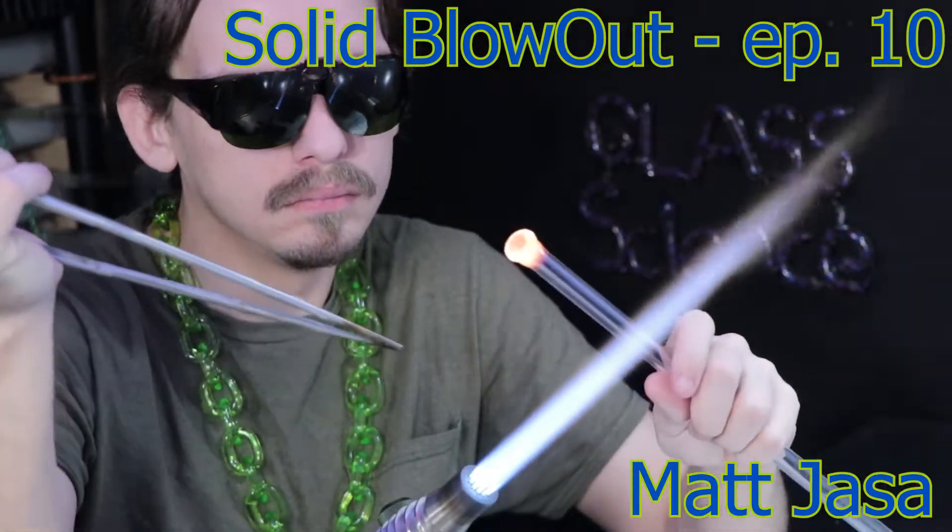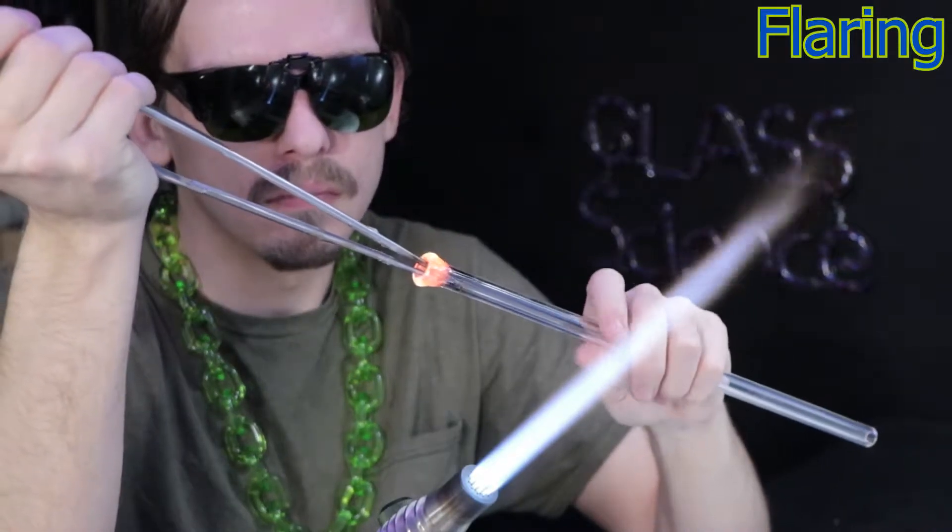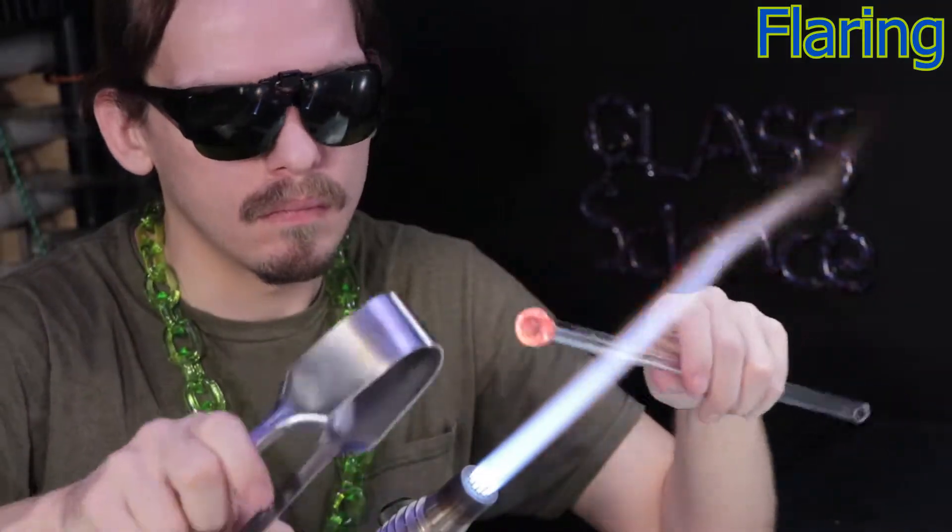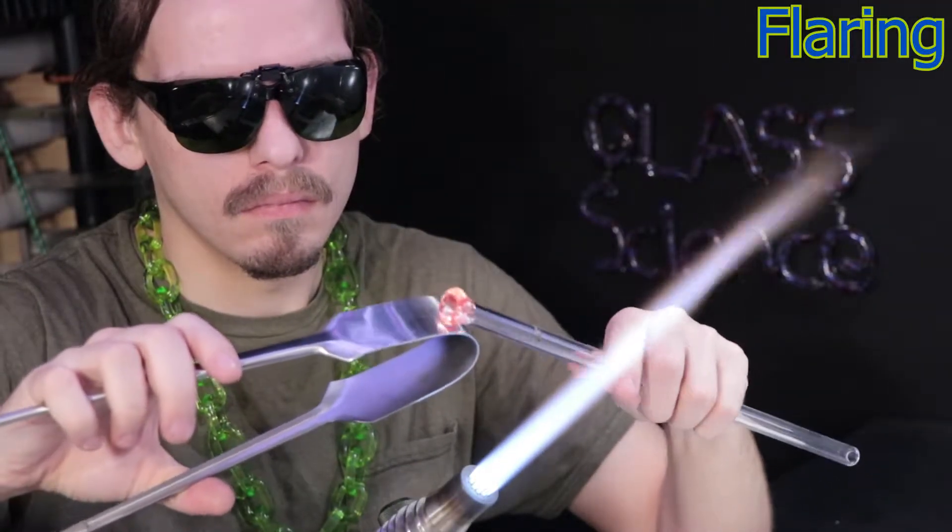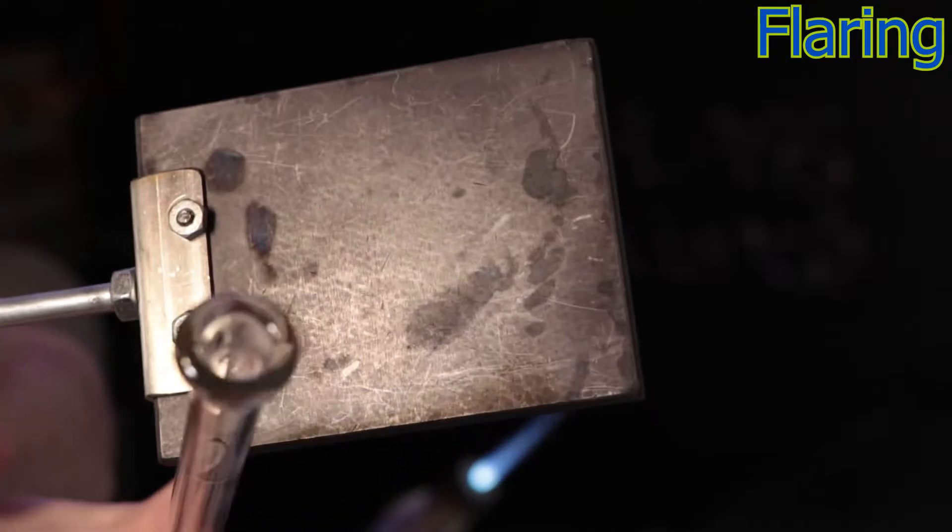I'm starting out here by thickening up and flaring out this tubing with my Jax. Now the Jax is a traditional glass blowing tool. It allows you to flare the tubing open, flatten it out on the paddle on the back, and also shape it on the paddle like I'm doing here. And you'll see I have a nice funnel shape now.